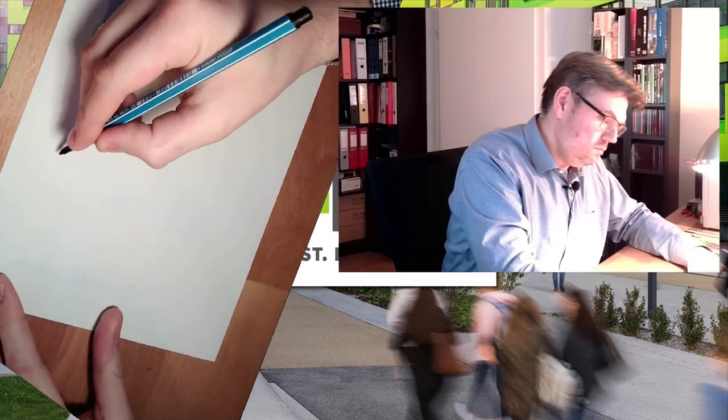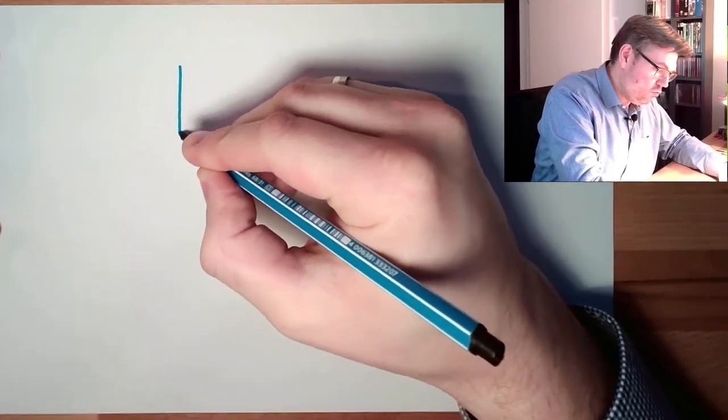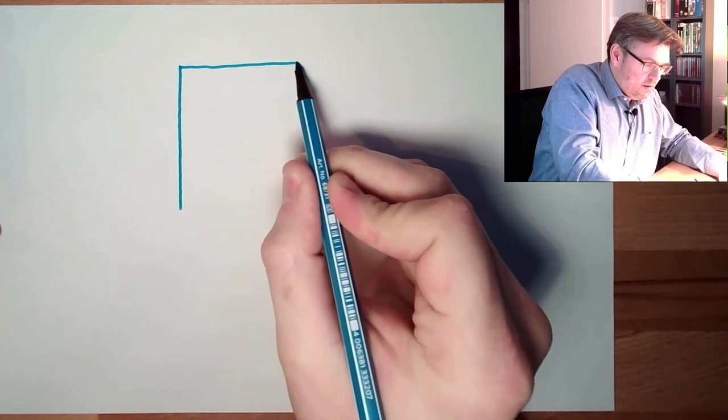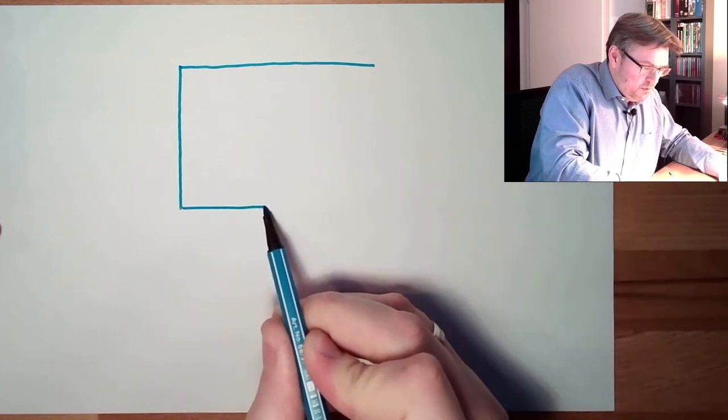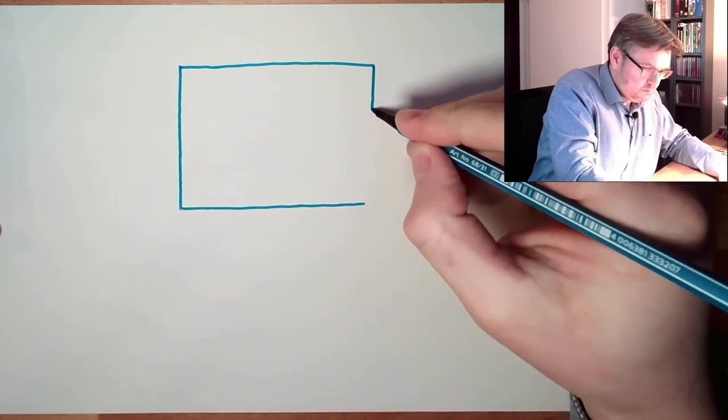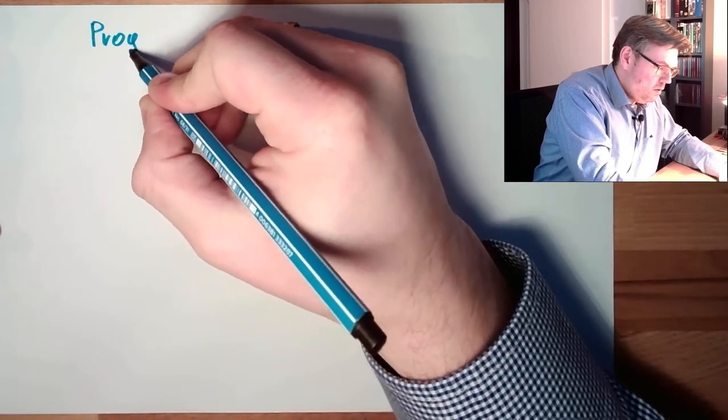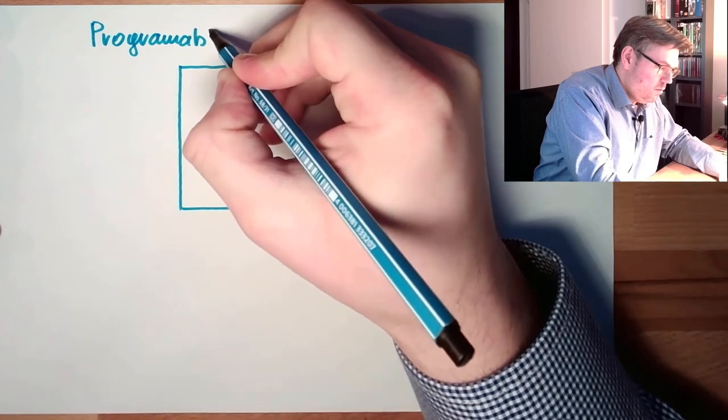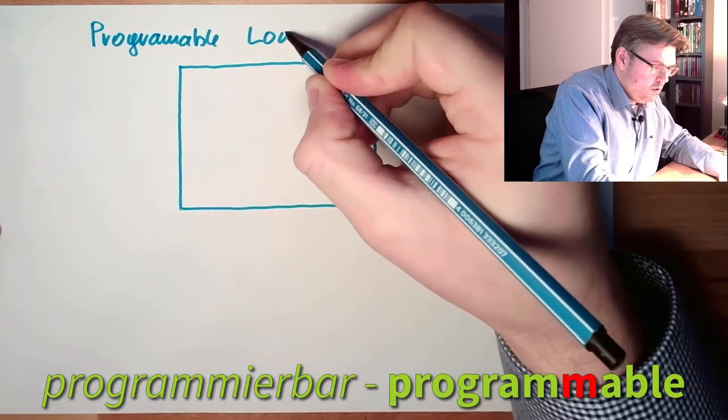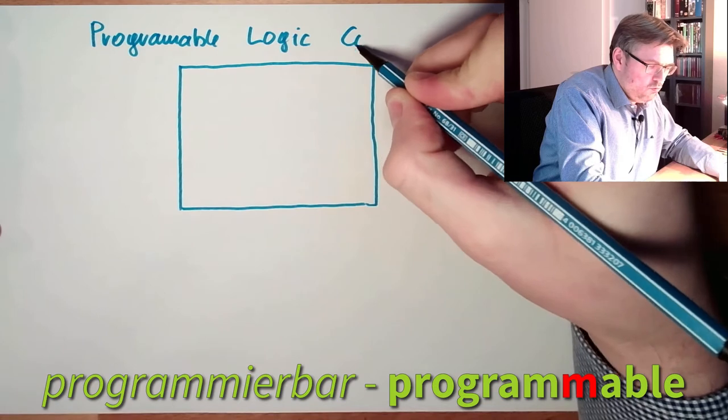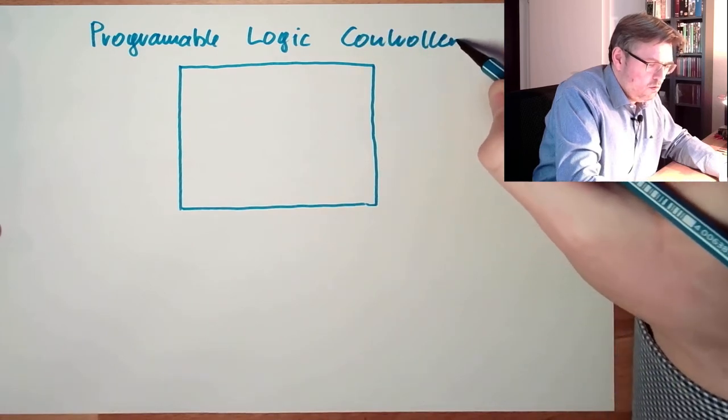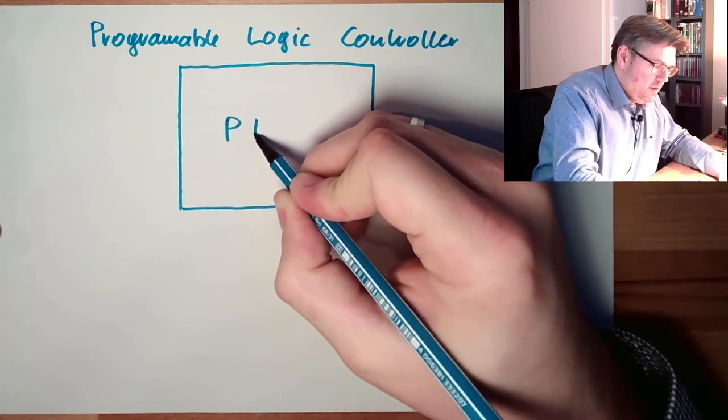I draw what a PLC is. So basically, a PLC is a neutral thing. There is not any controlling logic inside. This is the PLC. PLC means programmable logic controller.